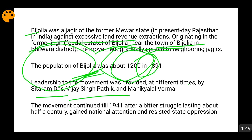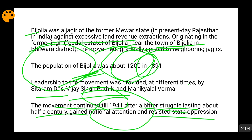Their leadership was not very effective. This movement continued until 1941 and involved a big struggle lasting around 50 years. It also gained national attention, resisted state oppression, and brought consciousness among the peasants against the feudal and oppressive elements of society and administration.